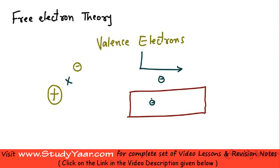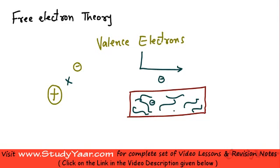The electron would not go out of the metal; rather it stays inside the metal and moves within it. This movement is responsible for conduction of current in a metallic solid.